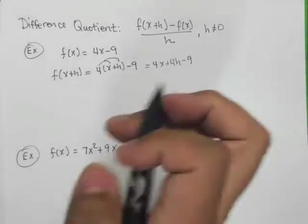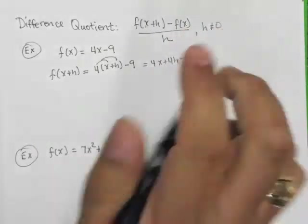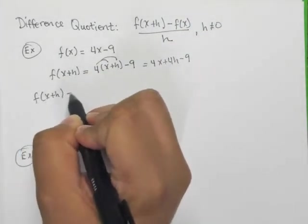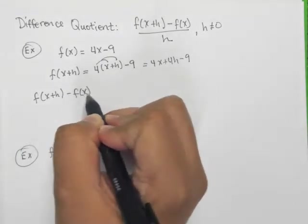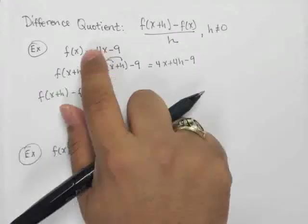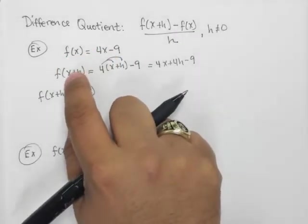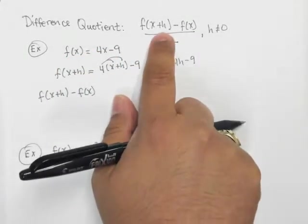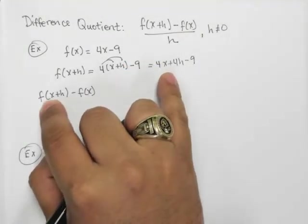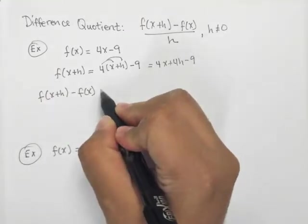The very next step is for me to say, what is this top part? What is f of x plus h minus f of x? I kind of take it into some smaller steps. I call them baby steps. So I've got f of x, I now have f of x plus h, now I'm going to find this difference. So this right here, f of x plus h, was the result from this step over here.